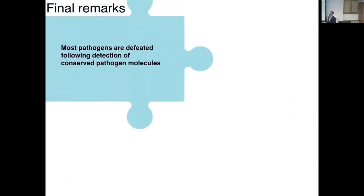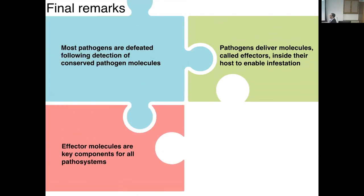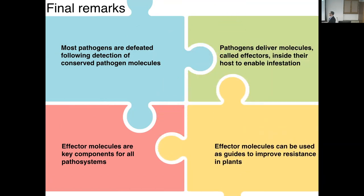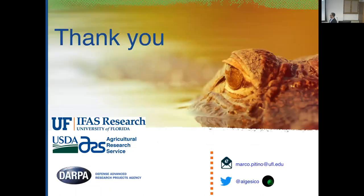Final remarks: most pathogens are defeated following detection of conserved pathogen molecules. Pathogens deliver molecules called effectors inside their host to enable infestation. Effector molecules are a key component for all pathosystems and can be used as a guide to improve resistance in plants. I would like to thank the people who helped me build my strength and research program. Thank you.